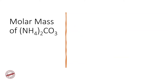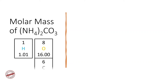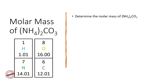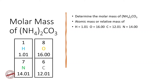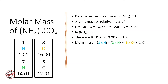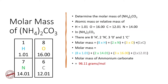Next we will determine the molar mass of ammonium carbonate. The elements present are hydrogen, oxygen, carbon, and nitrogen. The molar mass equals 8 × 1.01 (hydrogen) + 2 × 14.01 (nitrogen) + 3 × 16 (oxygen) + 1 × 12.01 (carbon), which sums to 96.11 grams per mole. So in one mole of ammonium carbonate, the mass is 96.11 grams.